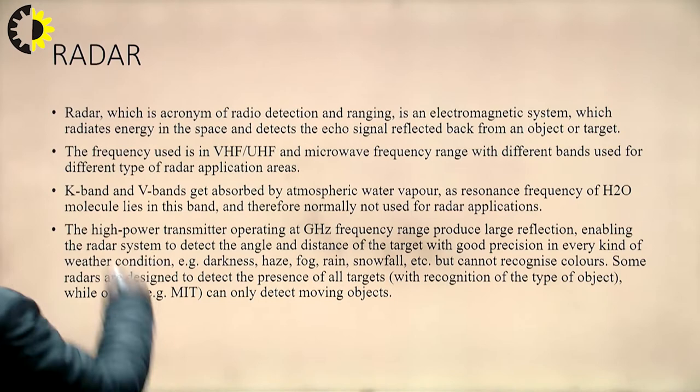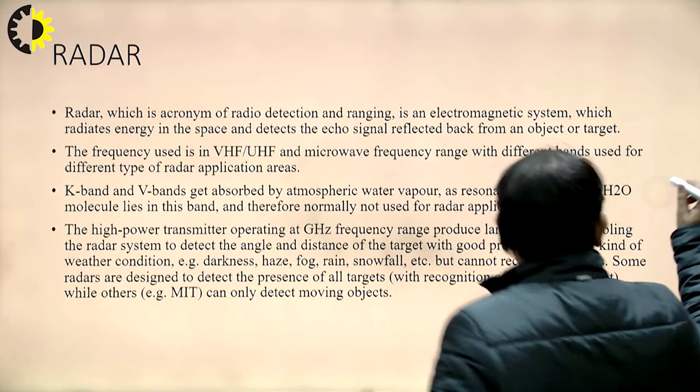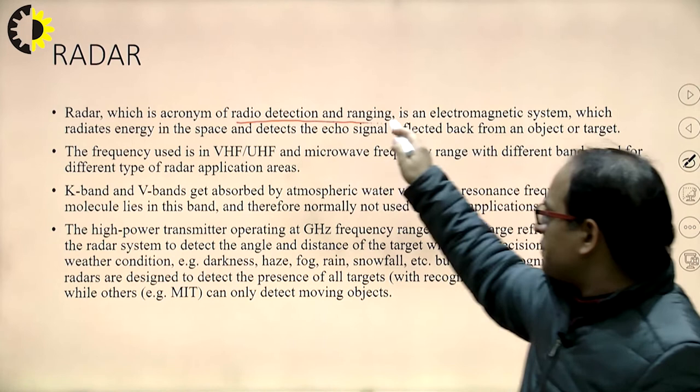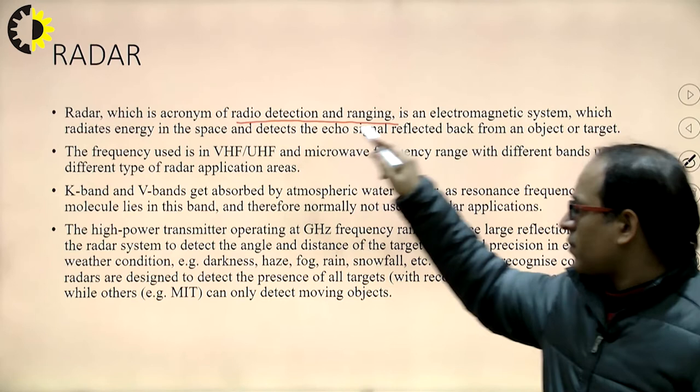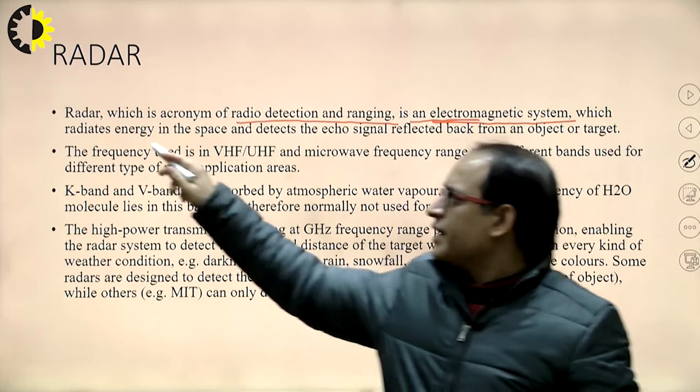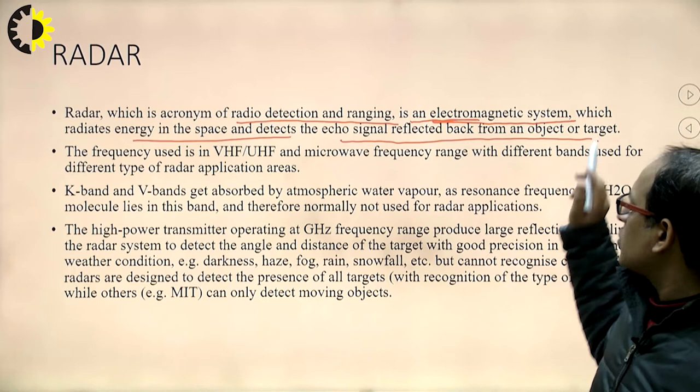The first topic is the basic introduction of the Radar. Radar stands for Radio Detection and Ranging. It is an electromagnetic system which radiates energy in the space and detects the echo signal reflected back from an object or target.